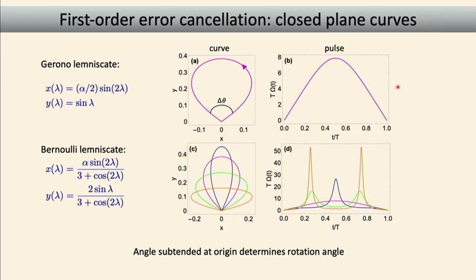Girnono had one particular lemniscate shape, Bernoulli had another. If you chop the figure eight in half, you get a nice closed curve. The opening angle at the origin tells you the angle of rotation about the x-axis being performed. If you want a pi-over-two gate about x while cancelling noise, draw a closed curve with opening angle related to pi-over-two. Reading off the curvature gives you the pulse — for the Girnono lemniscate it looks like half a sinusoid; for Bernoulli, other smooth shapes emerge.